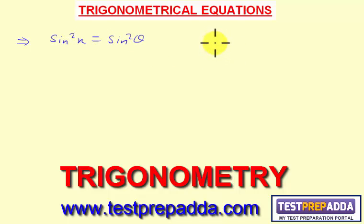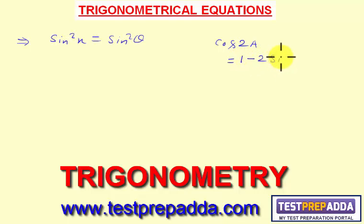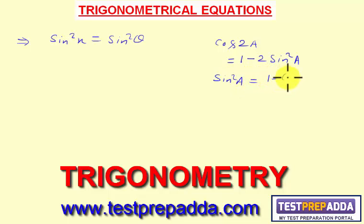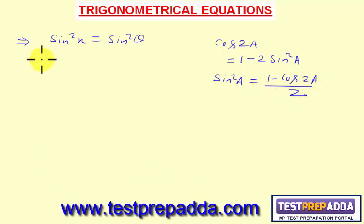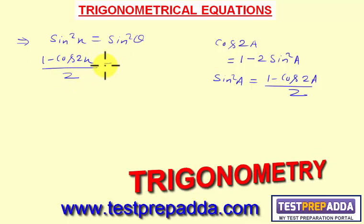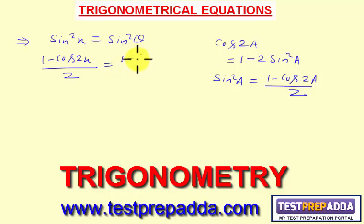Recall that cos 2a, when written in terms of sin, is 1 − 2sin²a. From this we get sin²a = (1 − cos 2a) / 2. Substituting: sin²x = (1 − cos 2x) / 2 and sin²θ = (1 − cos 2θ) / 2.